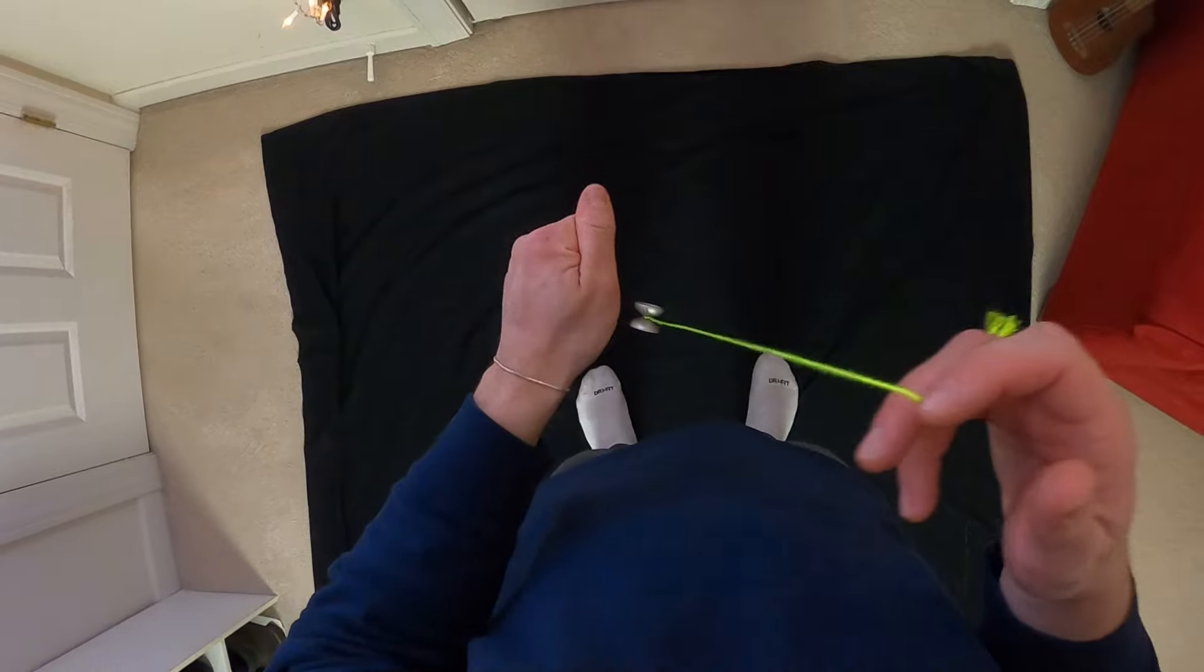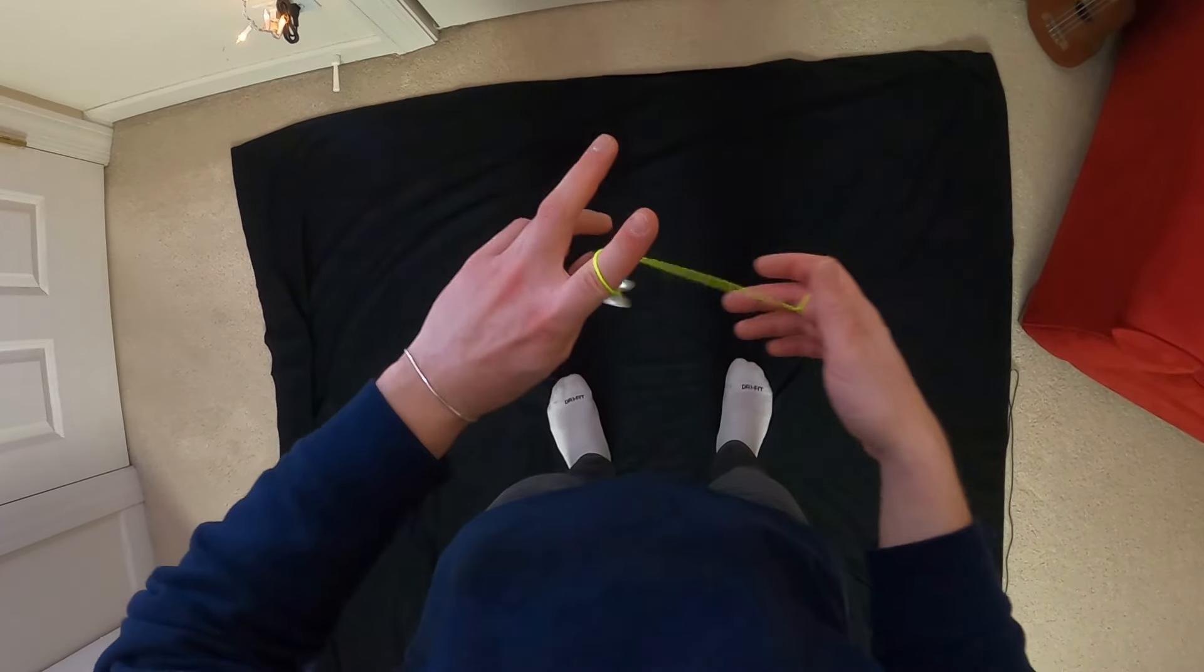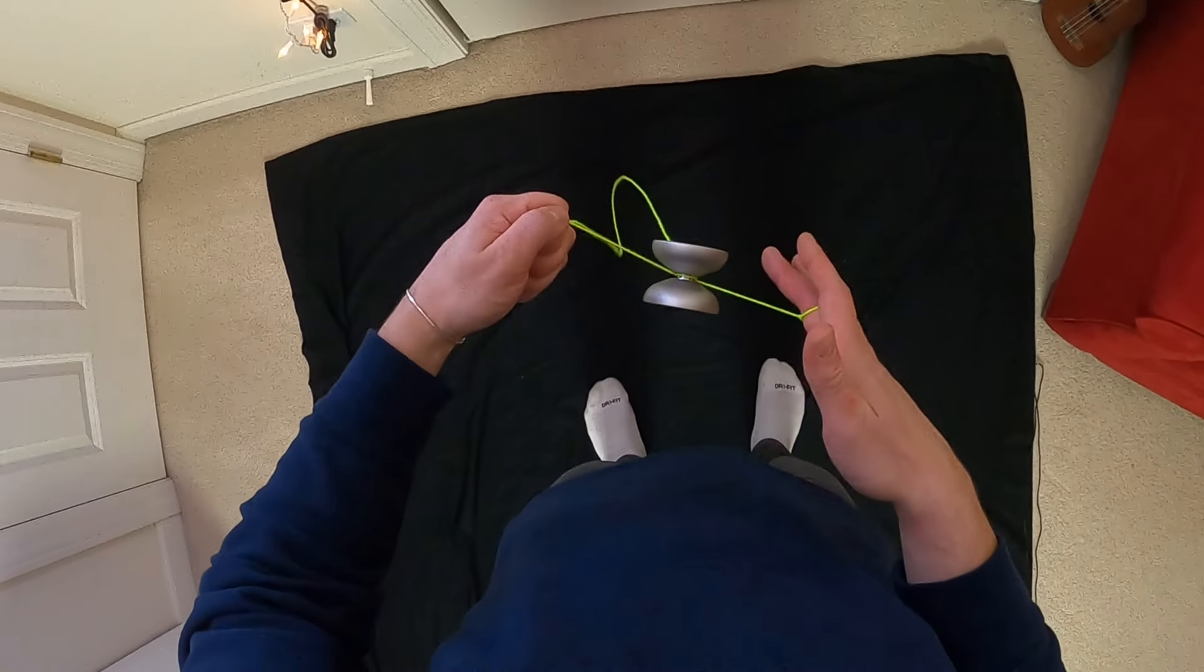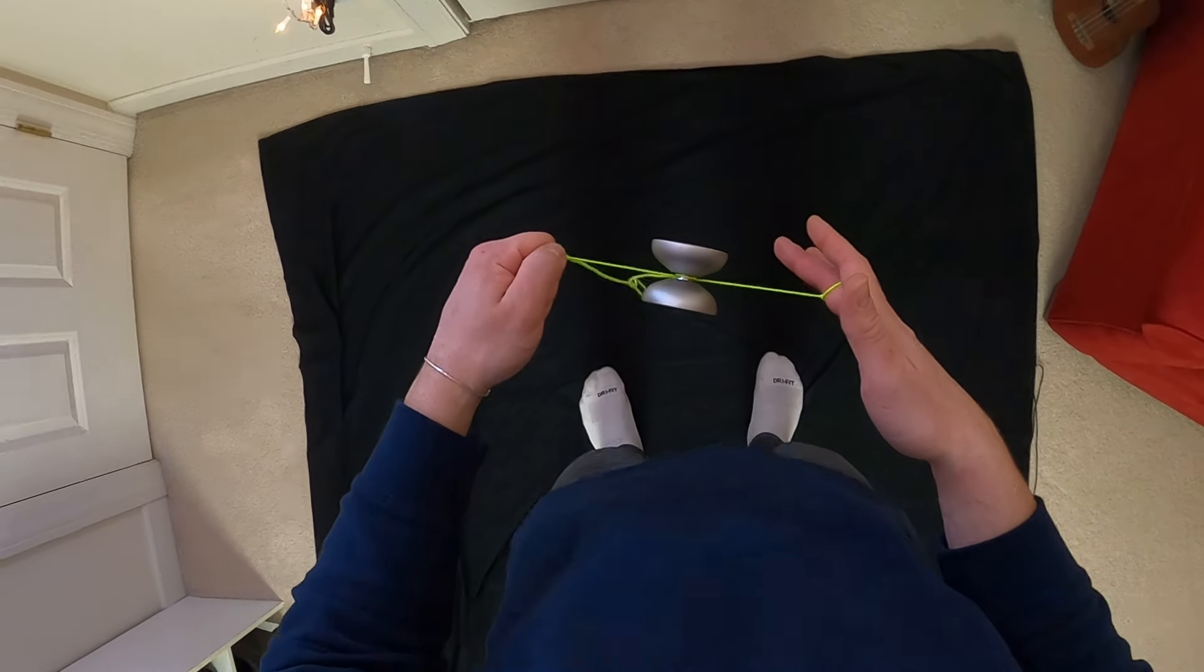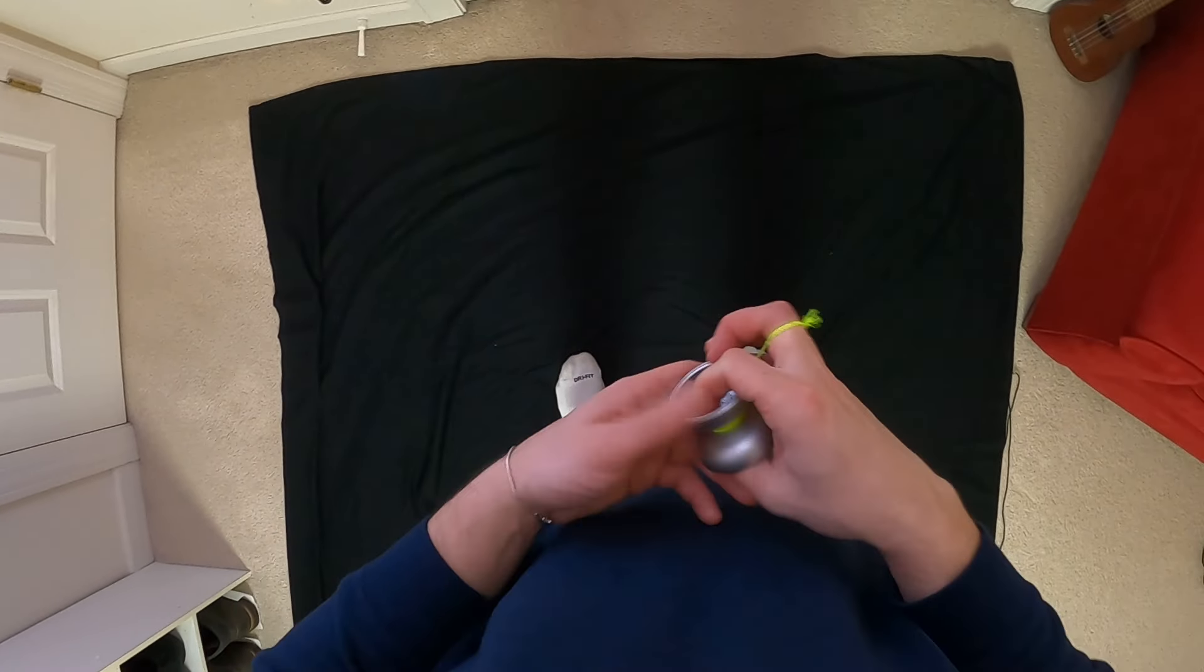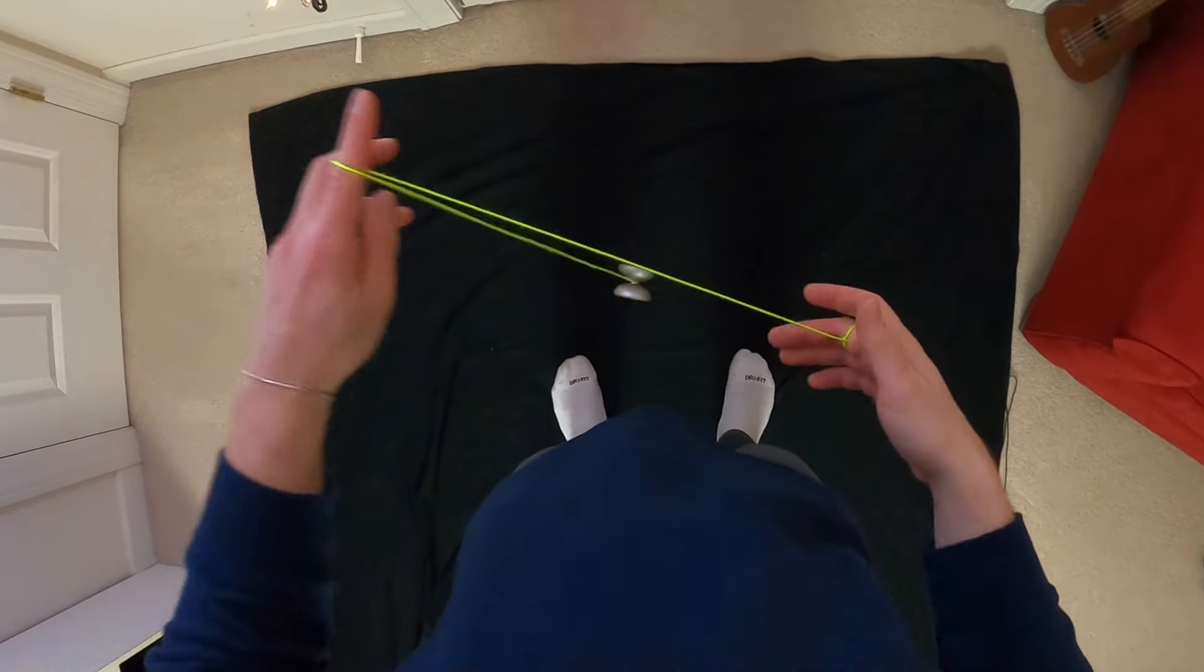I personally hold it with the thumb and pointer finger of my non-throw hand. So once I kind of curl this guy like that and hop up, I'm holding the pinch right there with the thumb and pointer finger of my non-throw hand. But once you kind of get that motion down, you can move on to our next step, which is flipping that string around.